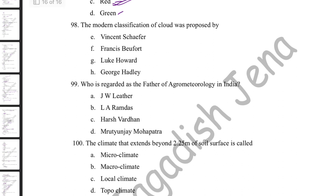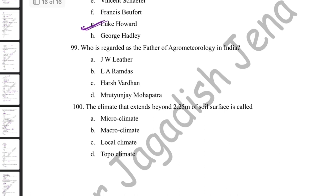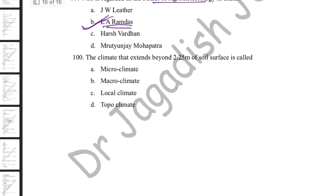The modern classification of clouds was proposed by Luke Howard. Based on Howard's classification, the World Meteorological Organization classified clouds in the 1956 Cloud Atlas into 10 forms. The father of agrometeorology in India is L.A. Ramdas. The climate that extends beyond 2.5 m of the soil surface is called macro climate or major climate. Climate confined to the crop ecosystem is micro climate, local climate, or topo climate.